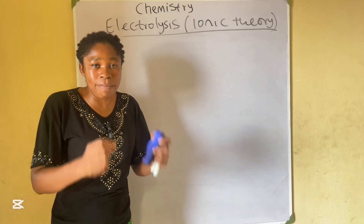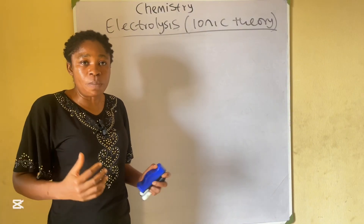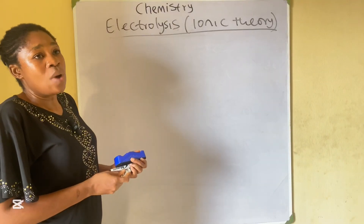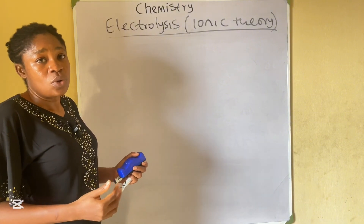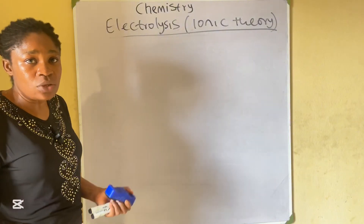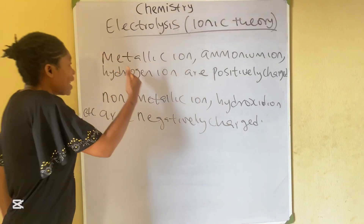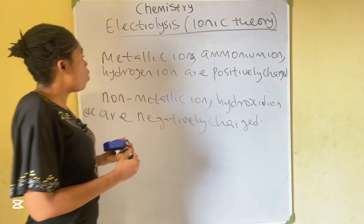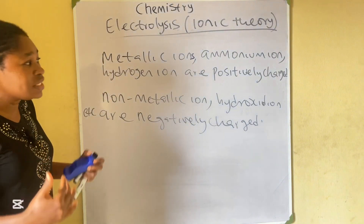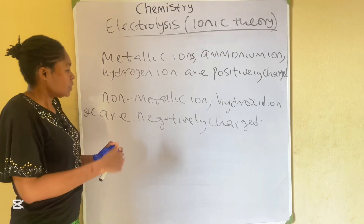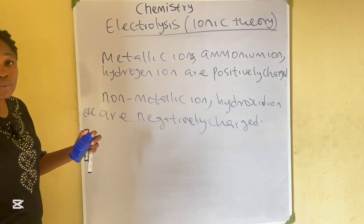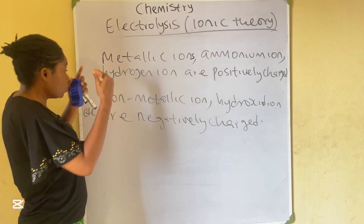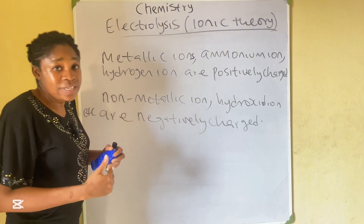A substance, when melted or dissolved in water, breaks up into free-moving particles called ions. So we have charged particles called ions. The ions could be positively charged or negatively charged. Metallic ions, ammonium ion, and hydrogen ion are positively charged. While non-metallic ions and any radical that is negatively charged are negatively charged — these are called anions.